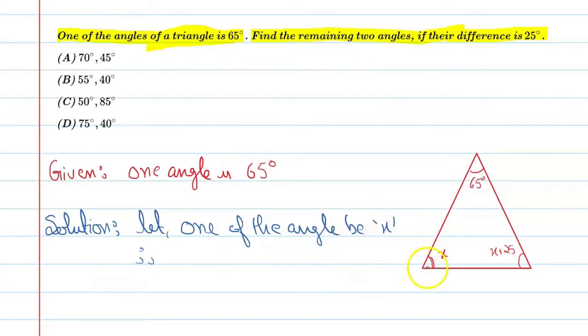Therefore, this minus this is equal to 25. So you can say another angle will be x plus 25.